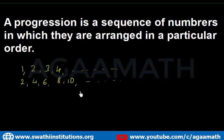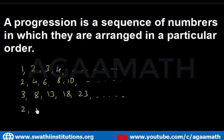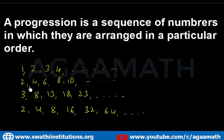We can also take numbers like 3, 8, 13, 18, 23 — these are also progressions. Another example: 2, 4, 8, 16, 32, 64. In the first sequence the difference is 1, in the next the difference is 2, then 5, and in the last each number is multiplied by 2. These all have a certain order, so they are called progressions — a sequence of numbers having a certain order.